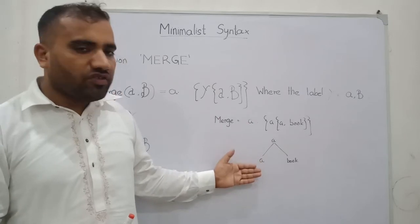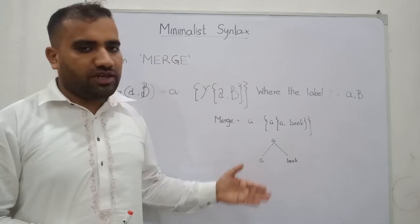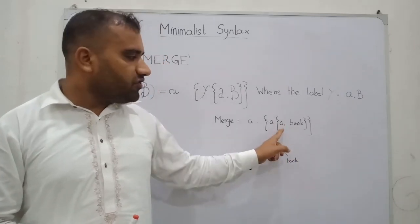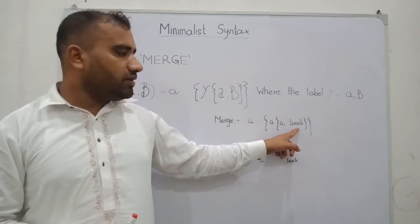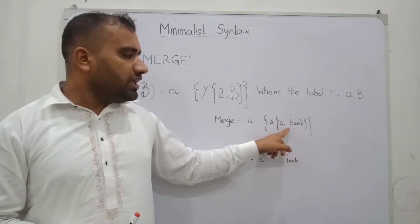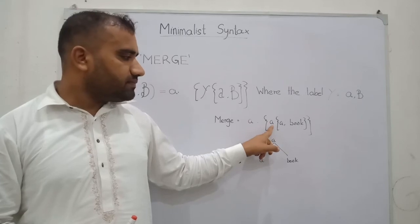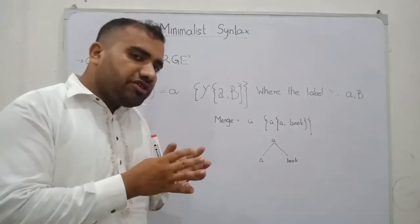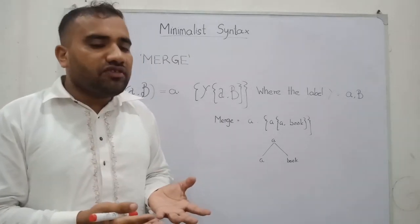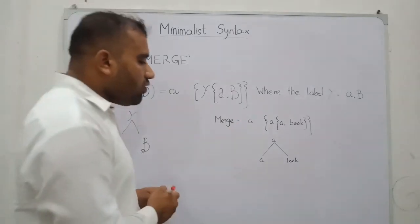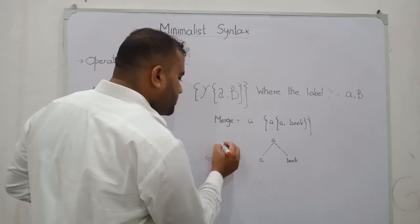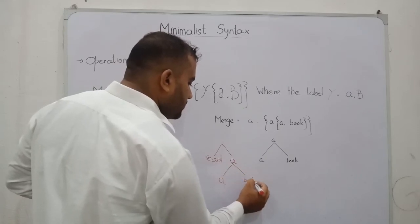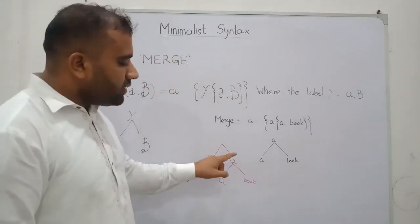This is our linguistic expression, showing that we have merged first alpha and beta. This category is alpha and this category is beta. If we merge these two categories, the label of the merged category will become alpha — that is the head. Then this head merges these two categories with another category. For example, 'read' merges with 'a,' and we have the word 'book,' which becomes the phrase.